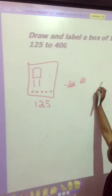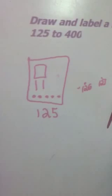This student drew the box and shows that in 125, you have 100, two tens, and five ones.